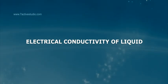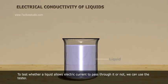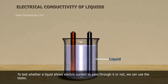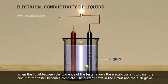Electrical conductivity of liquids: To test whether a liquid allows electric current to pass through it or not, we can use the tester. When the liquid between the two ends of the tester allows the electric current to pass,